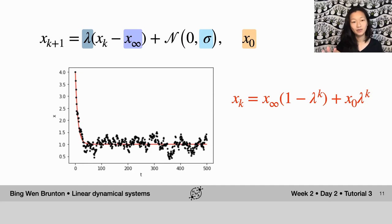What we're going to do is just add one more term to this equation that is not deterministic. In particular, we're going to specify another term here where the mapping from xk to xk plus 1 has a bit of process noise. That is a Gaussian random number with mean 0 and standard deviation sigma.